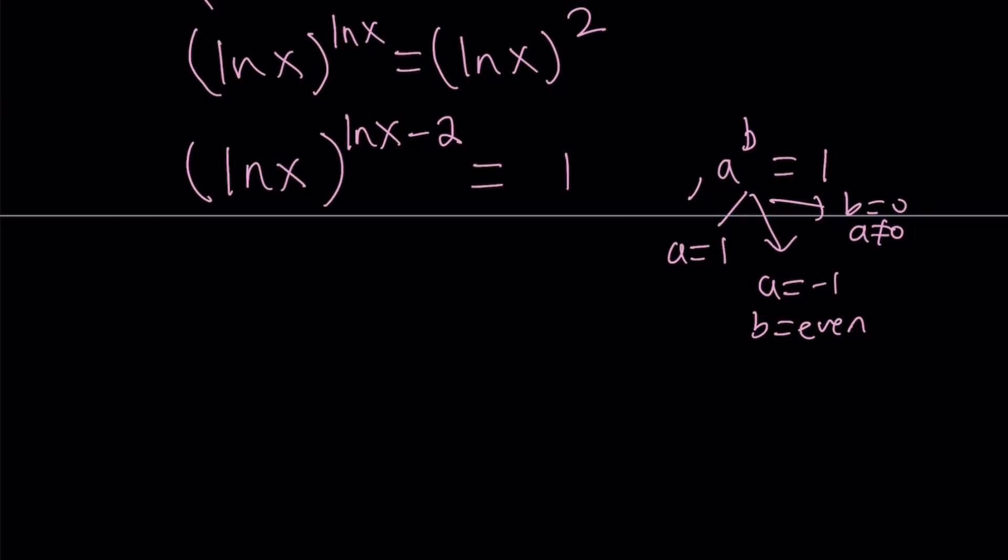So let's start with the first one. ln x can equal one. And in that case, we're going to be getting what? If ln x is equal to one, that means x is equal to e, right? Okay, cool.